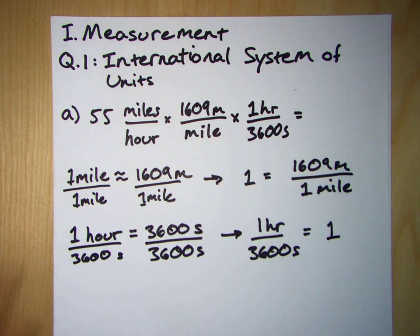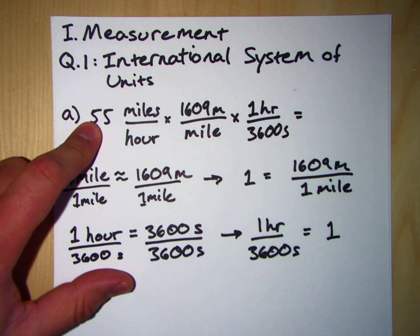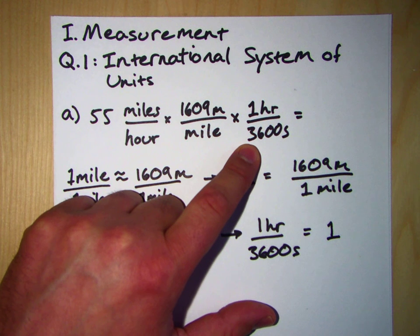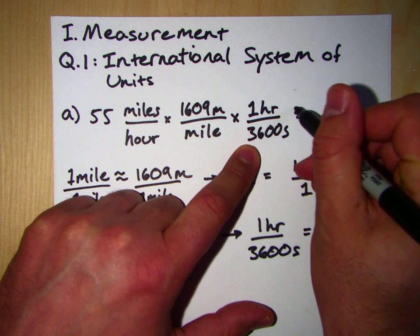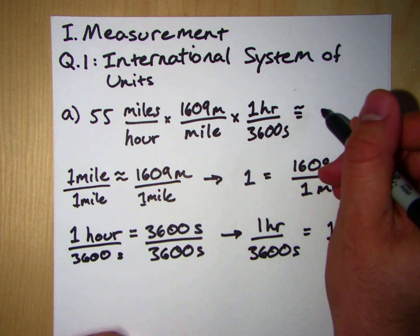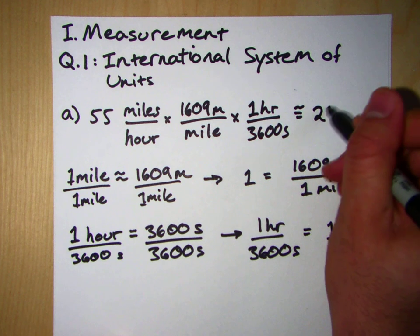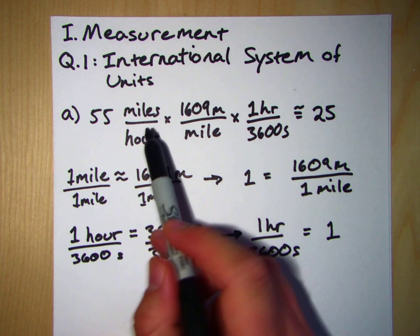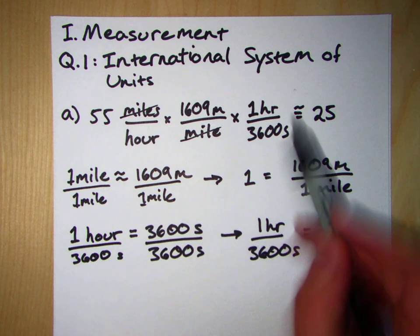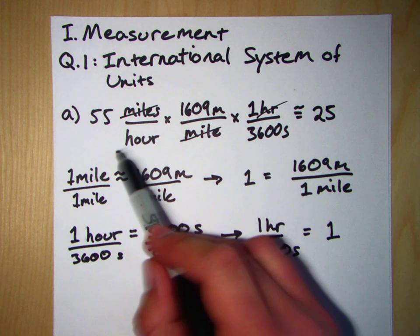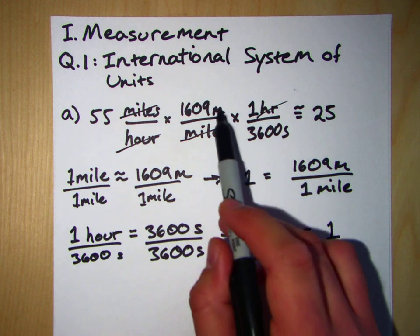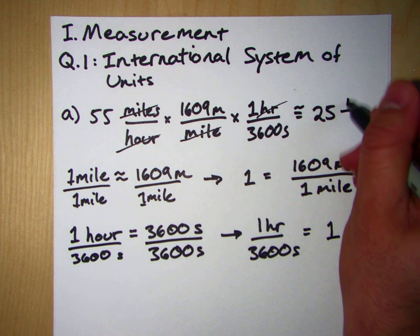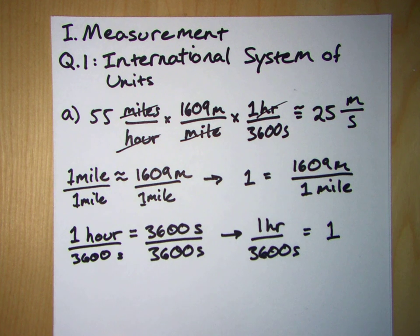Okay, now we just have to do some arithmetic. So the numbers are 55 times 1609 divided by 3600, and that should come out to be about equal to about 25. And what we see here, here's the real fun part. The units, these miles cancel out with these miles, and this hour cancels out with that hour. And what we're left with is meters on top and seconds on the bottom. So this is about equal to 25 meters per second.